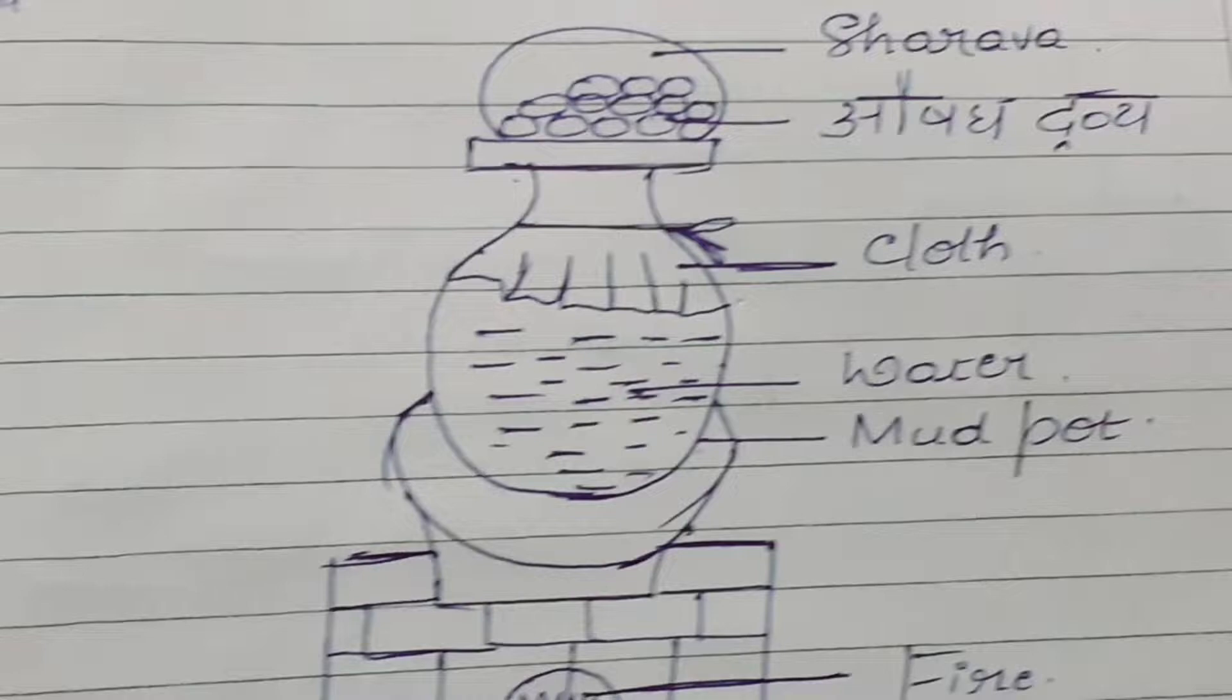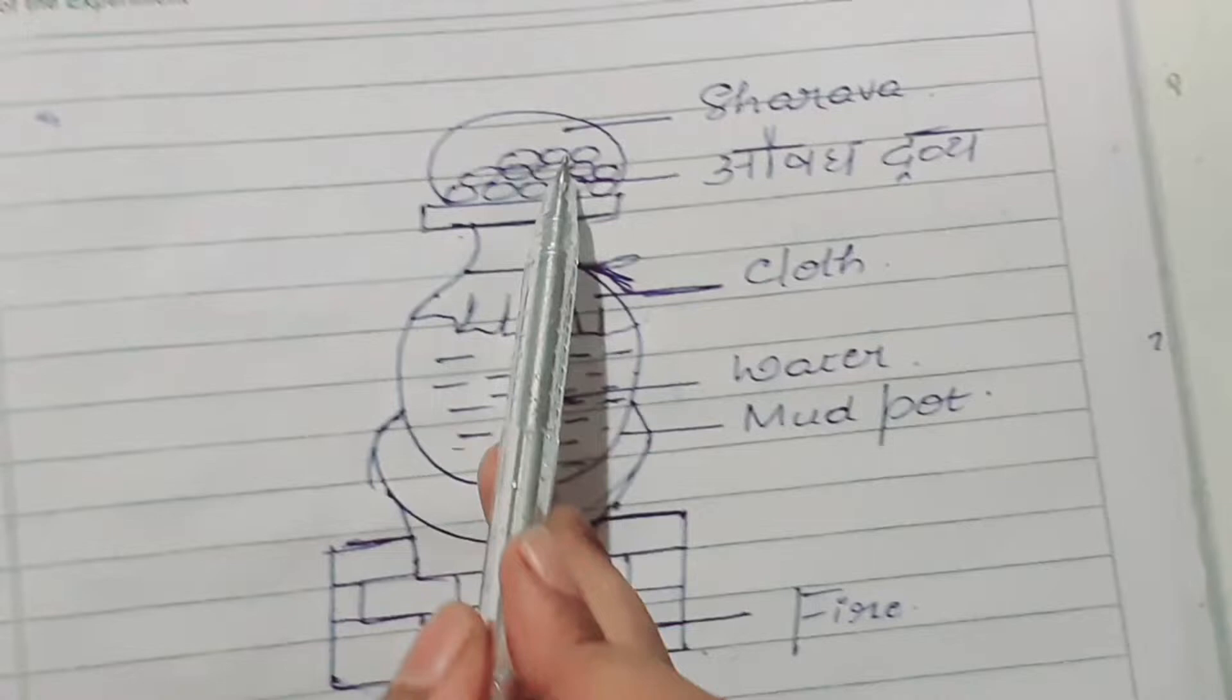Over this cloth, the drug that requires Swedana is placed, that is Swedaniya dravya. Here the aushadha dravya that requires Swedana is placed above the cloth. Then close it with a lid, that is sharava.